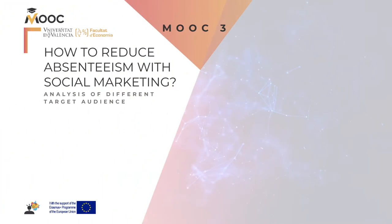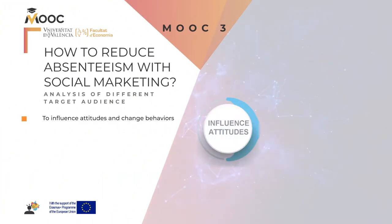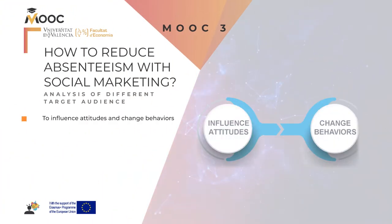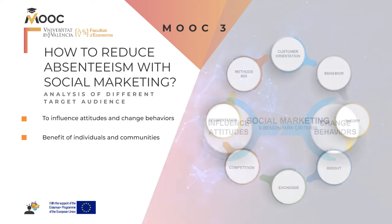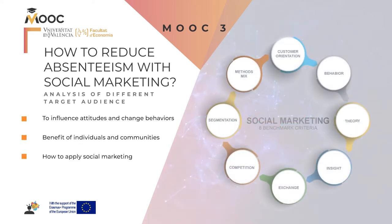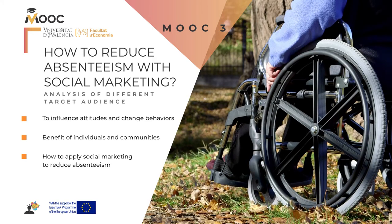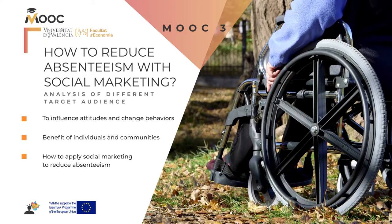The goal of social marketing is to influence attitudes and change behaviors for the benefit of individuals and communities for the greatest social good. In this mock you will discover how to apply social marketing to reduce absenteeism, a problem suffered by organizations working with people with disabilities.